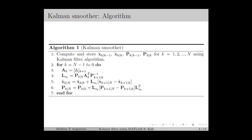The Kalman Smoother algorithm consists of two stages. In the first stage, also known as the forward pass, we compute the estimates x̂k|k-1, x̂k|k, Pk|k-1, and Pk|k for k equal to 1 to N using the Kalman filter algorithm. In the second stage, also known as the backward pass, we improve the estimate using all this information. This algorithm consists of a backward recursion starting from k equal to N minus 1 and going backwards.